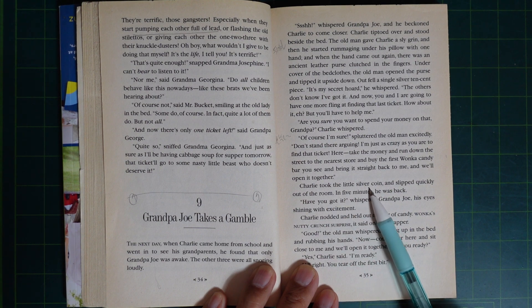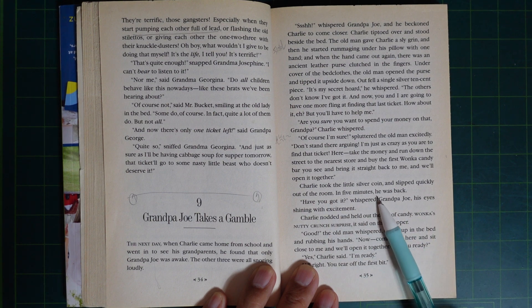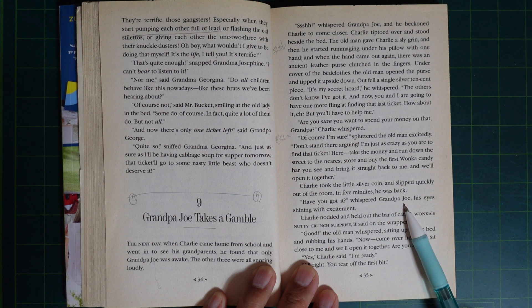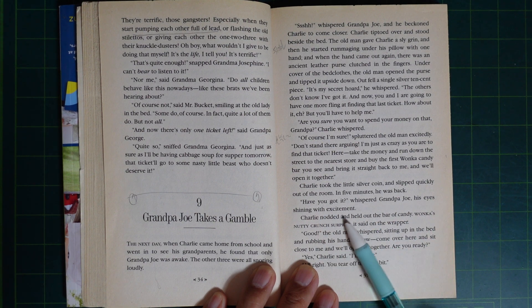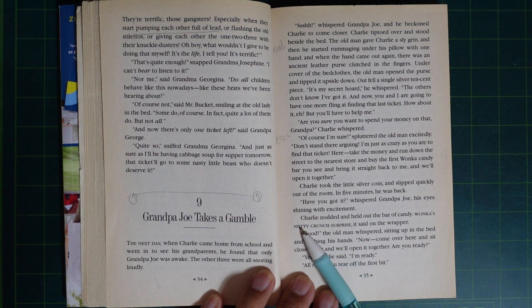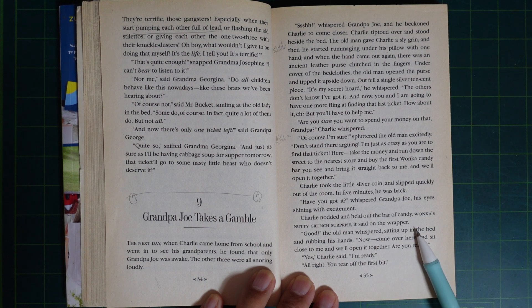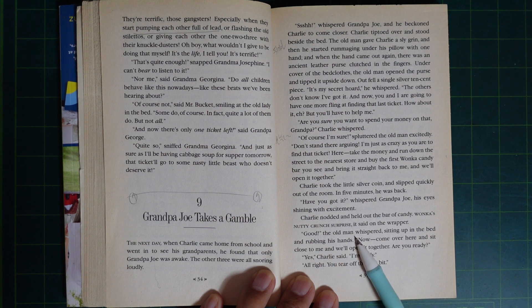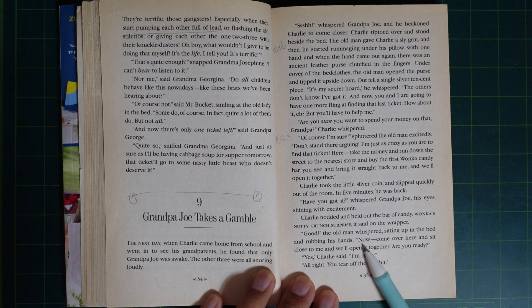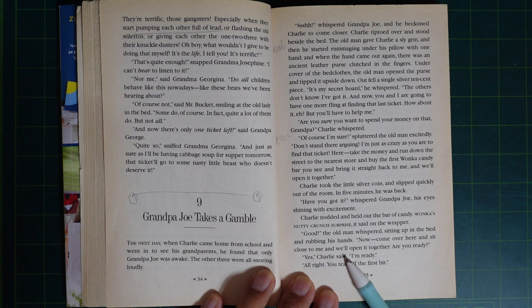Charlie took the little silver coin and slipped quickly out of the room. In five minutes, he was back. Have you got it? whispered Grandpa Joe, his eyes shining with excitement. Charlie nodded and held out the bar of candy. Wonka's Nutty Crunch Surprise, he read on the wrapper. Good, the old man whispered, sitting up in the bed and rubbing his hands. Now, come over here and sit close to me, and we will open it together. Are you ready? Yes, Charlie said. I'm ready.